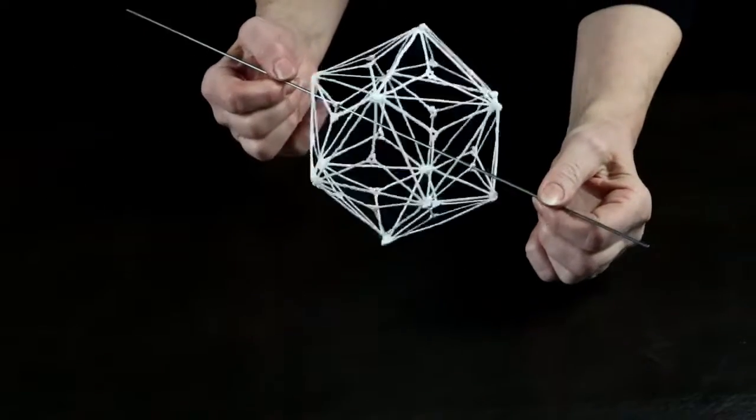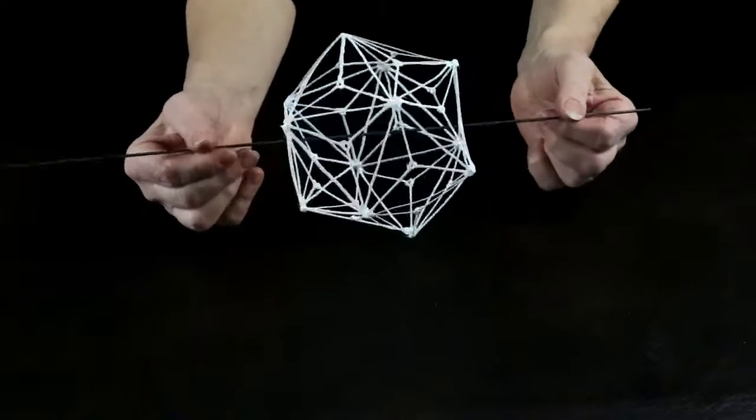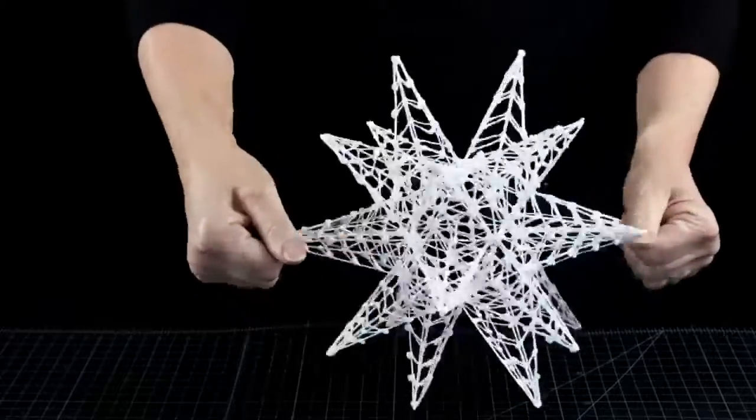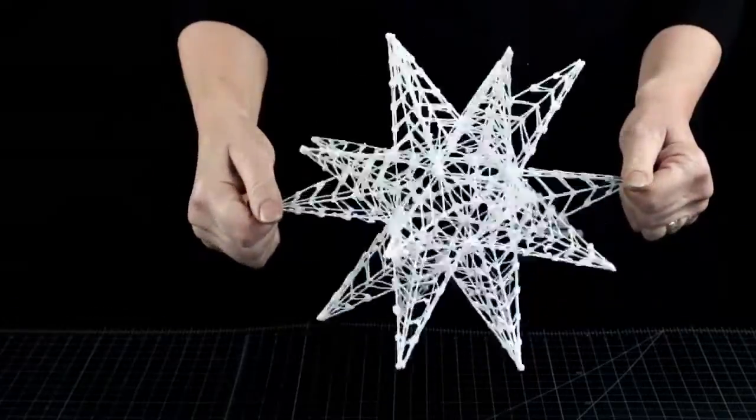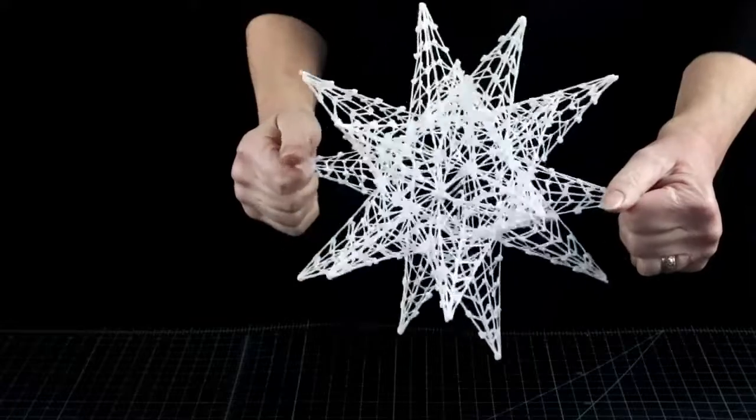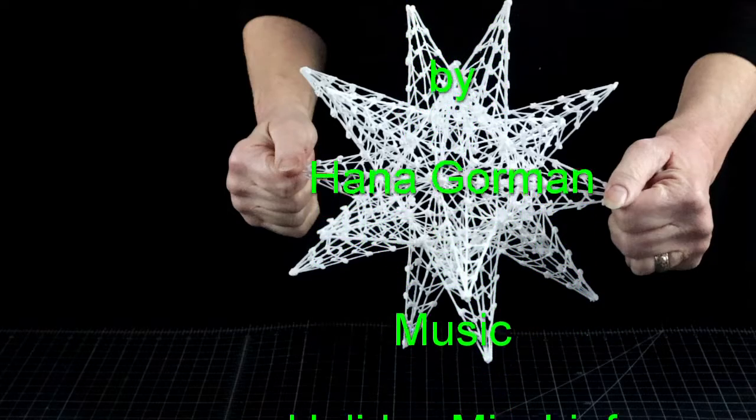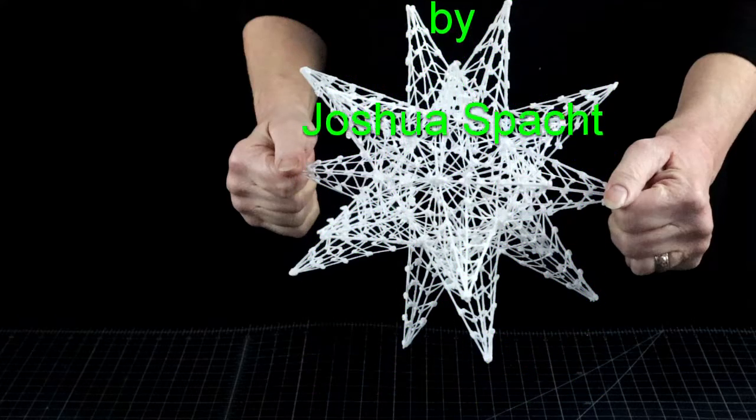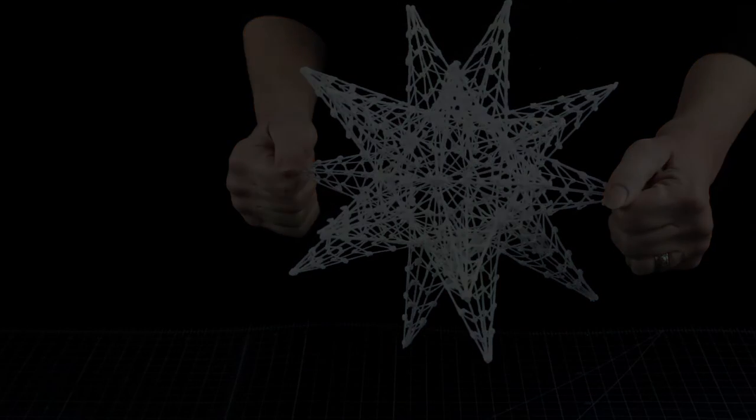So once you get the hang of the basic process you can go bigger. This one is made from three inch sided triangles and of course go outward from there, but we'll save this one for the next video. So until then, go and make something.